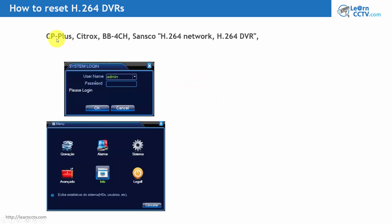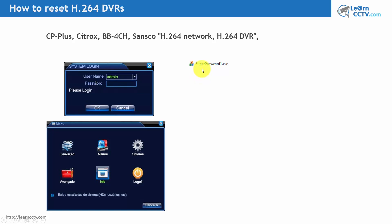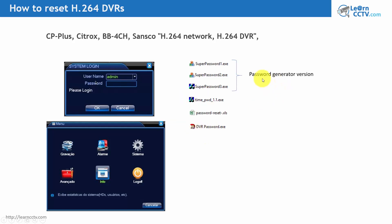Here are examples of DVRs that use the HiSilicon chip: CP+, Citrox, BB4CH, Sanco, and the generic ones using the name '8264 network' or '8264 DVR'. For those, you have password generators like SuperPassword1, SuperPassword2, SuperPassword3, TimePWD, and other reset tools like an Excel spreadsheet, and also the DVR password tool for Dahua DVRs. There are different password generators for different DVR versions using the HiSilicon chip.